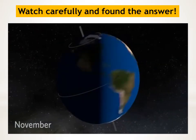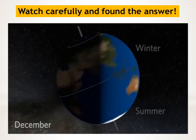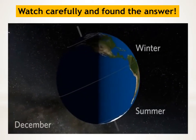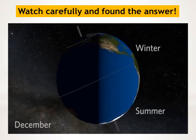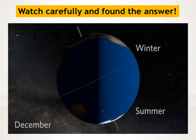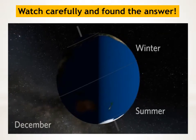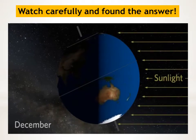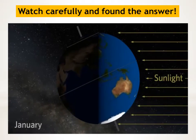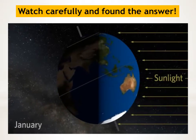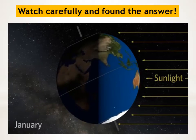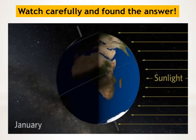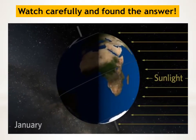Let's look at earth when it's winter in the northern hemisphere. Observe how the north pole tips away from the Sun. This means that sunlight strikes the northern hemisphere at a shallow angle for a short period of time. This is why winter weather is generally cool, with short days and long nights.